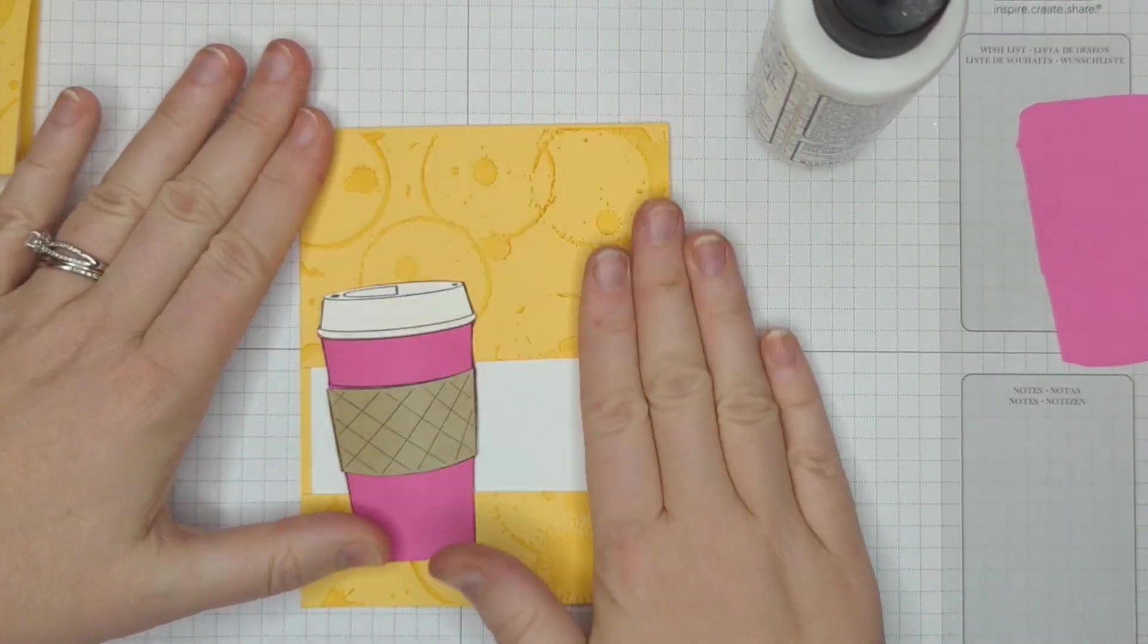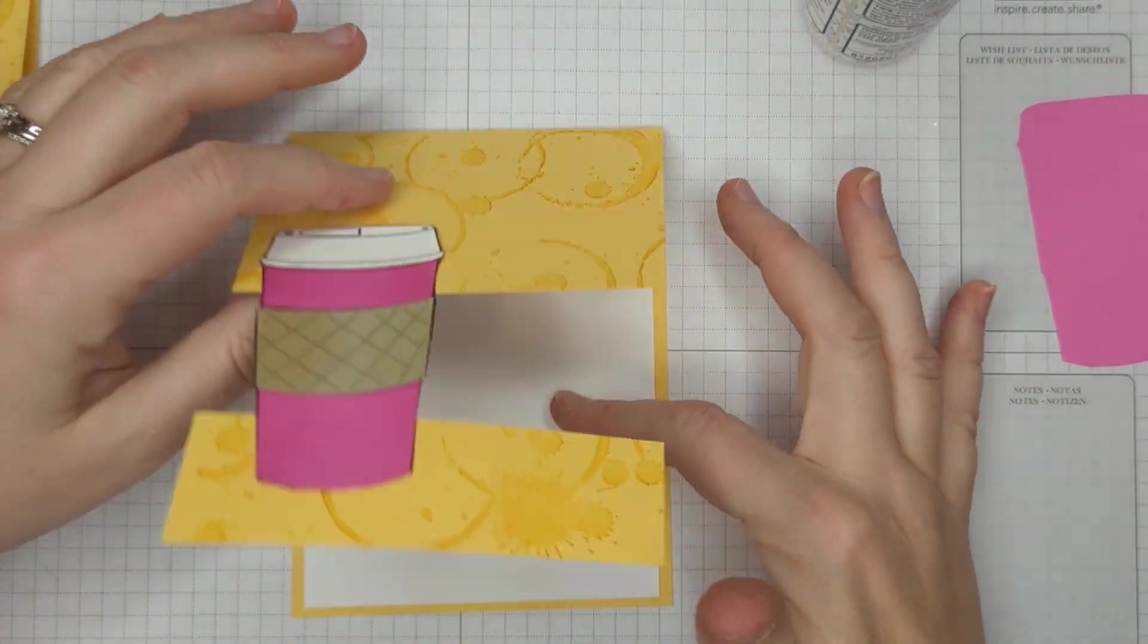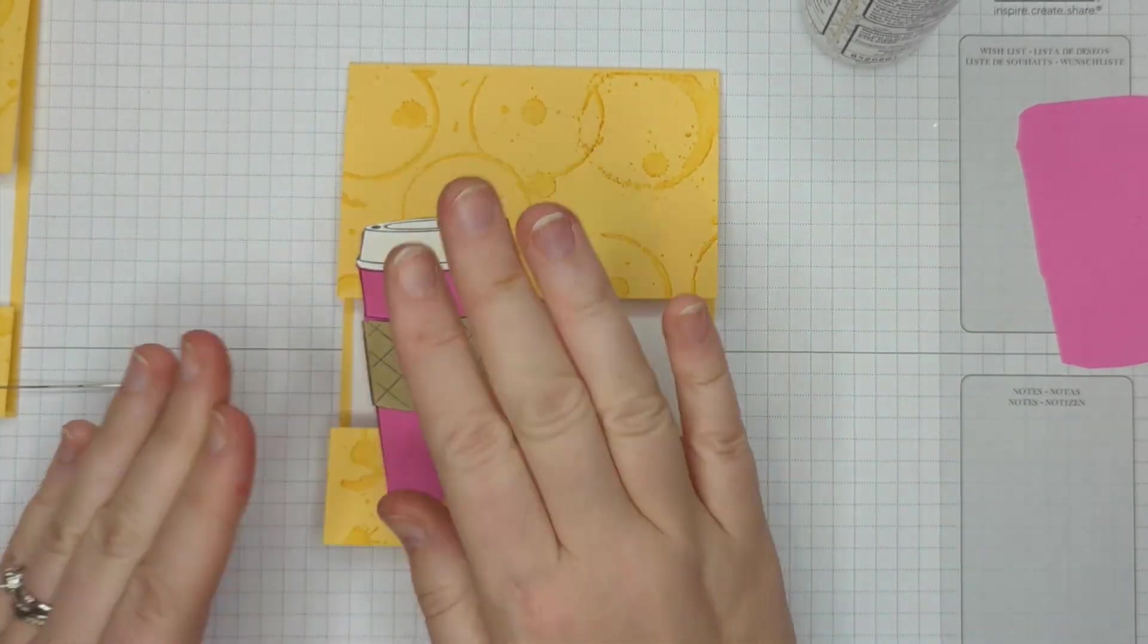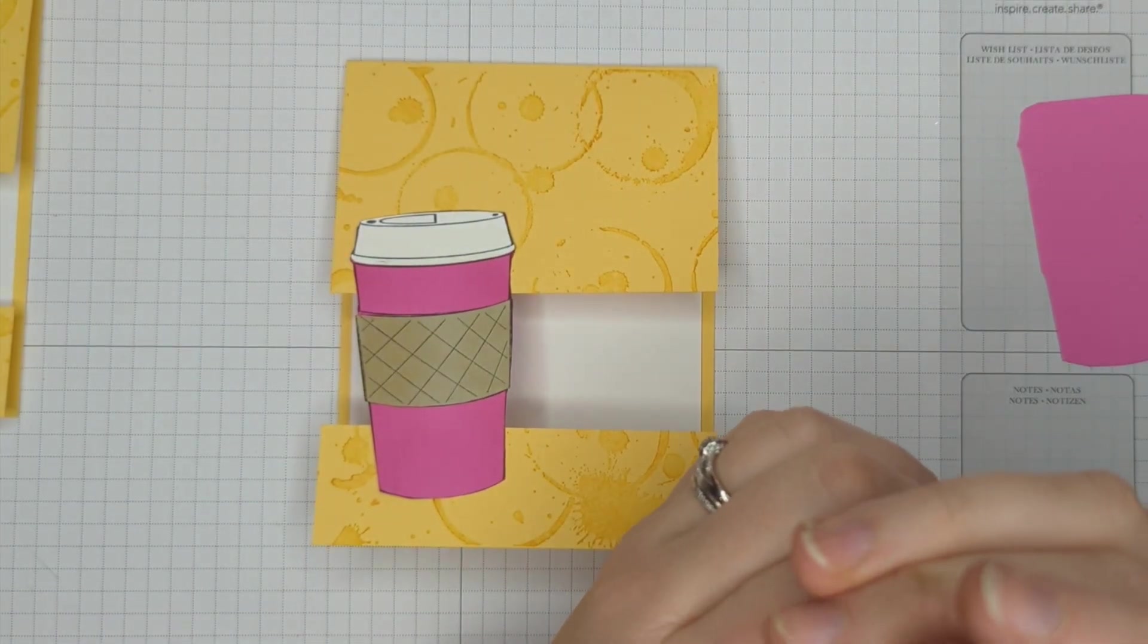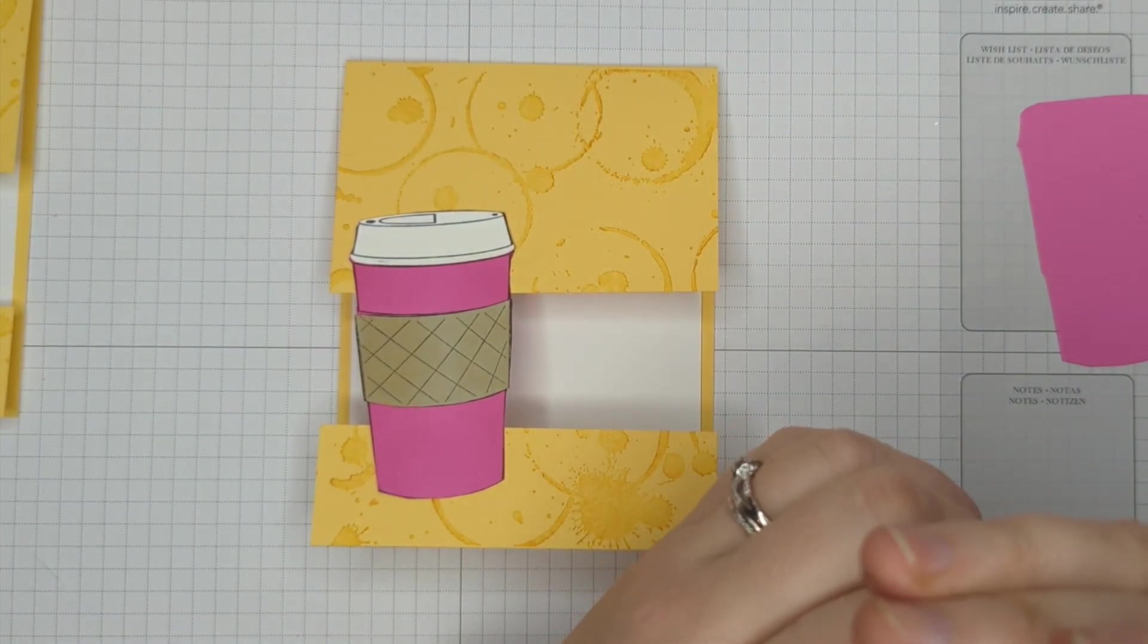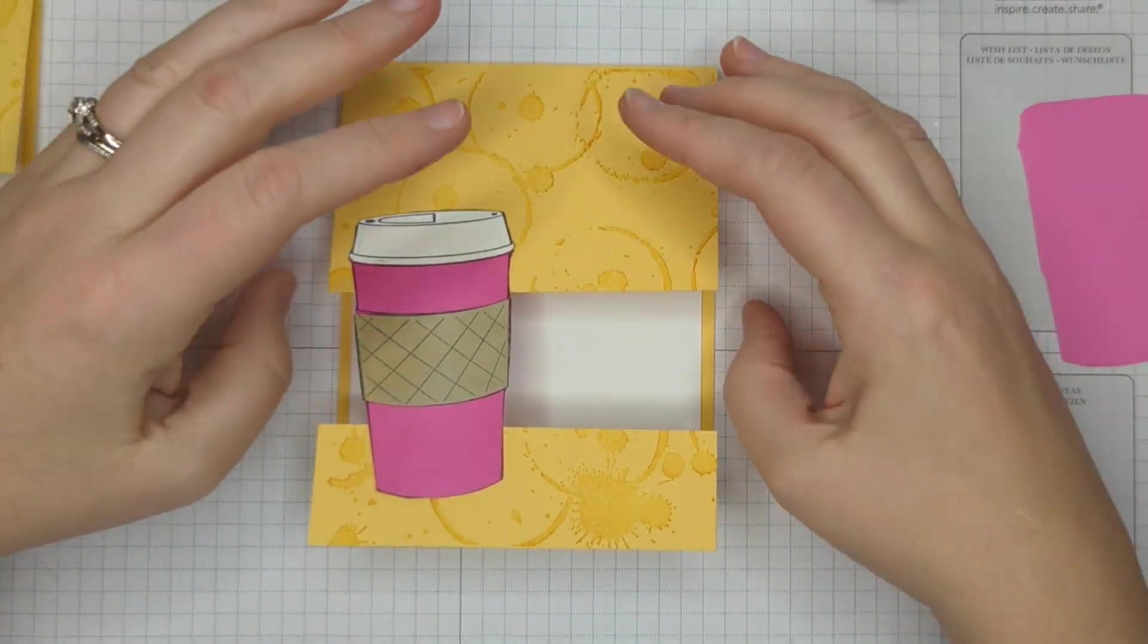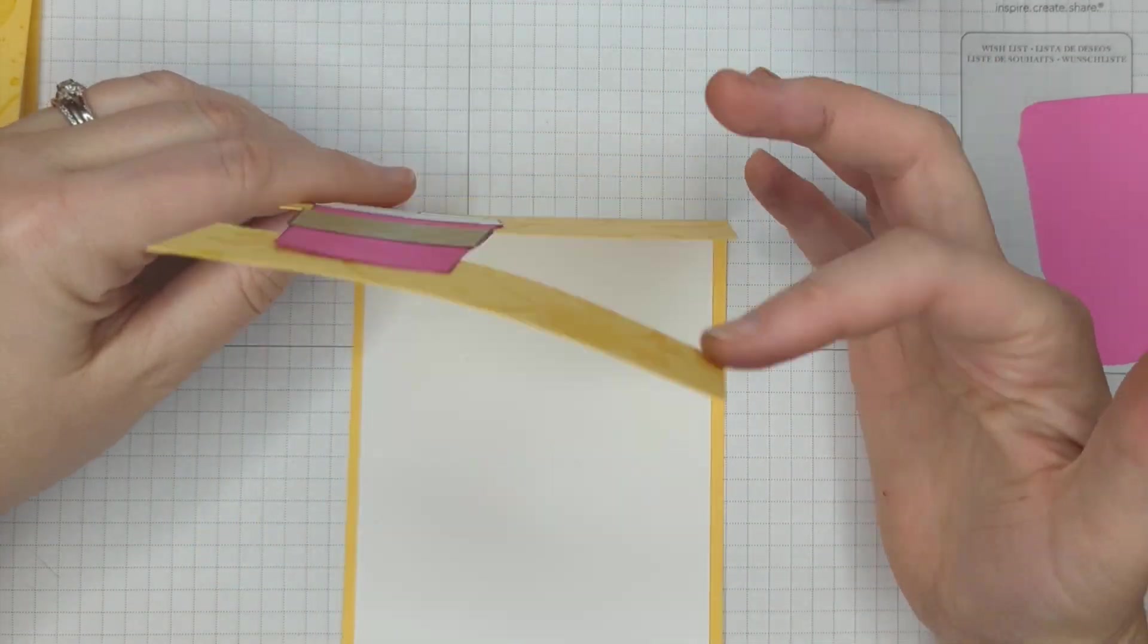Alright, so when we place that down, look at that. Now we have a card base with this floating panel here. See, there's nothing in here. It just looks really cool. I like the way that feels. Now there's a couple other things that I'm going to do here. First off, I want to add a sentiment. And I'll show you how to do that here in a second. But I wish you could feel this part. It feels to me just, I don't like it when it feels a little flimsy.